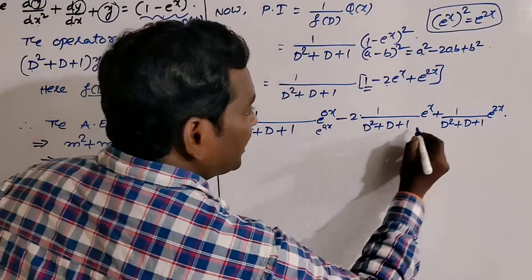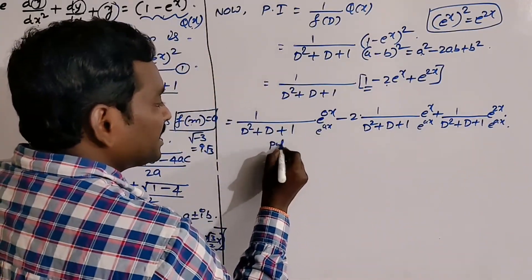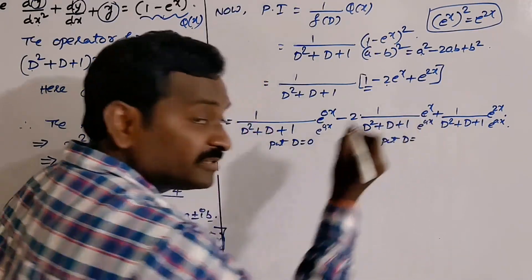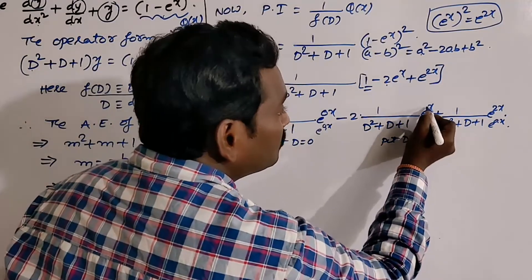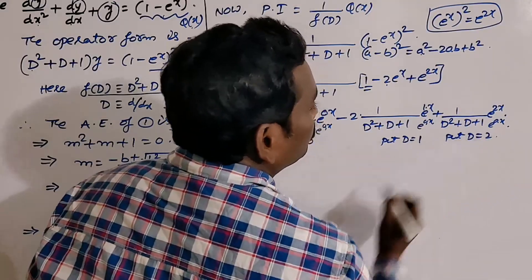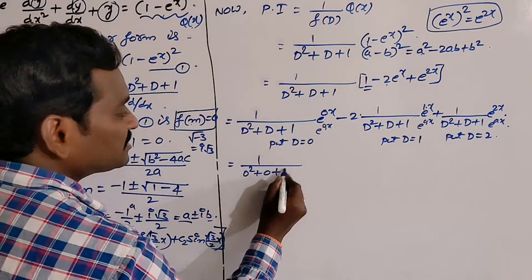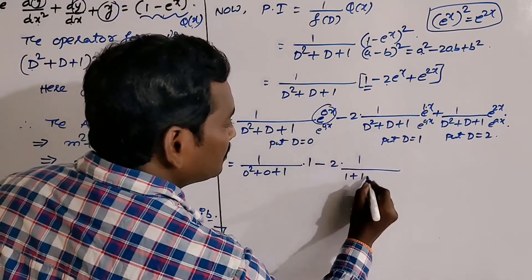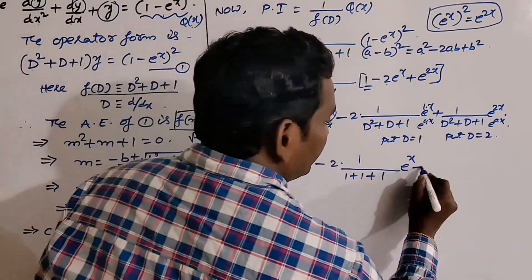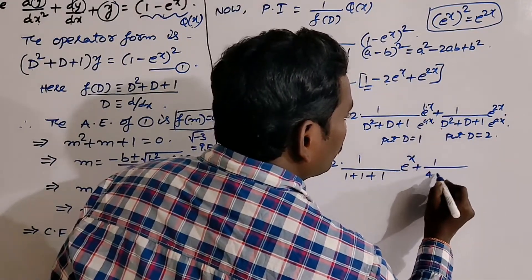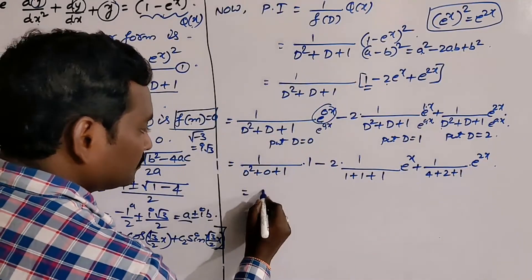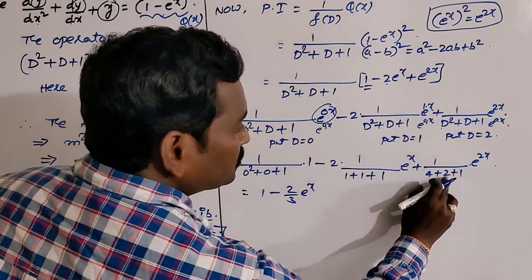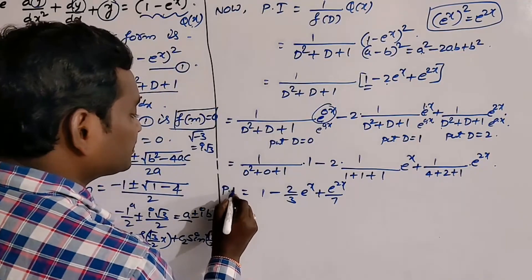Apply the rule: replace D with a. For e^(0x), replace D = 0: 1/(0² + 0 + 1) · 1 = 1. For eˣ, replace D = 1: 1/(1 + 1 + 1) = 1/3, so the second term is −2/3 · eˣ. For e²ˣ, replace D = 2: 1/(4 + 2 + 1) = 1/7, giving e²ˣ/7. So PI = 1 − (2/3)eˣ + e²ˣ/7.